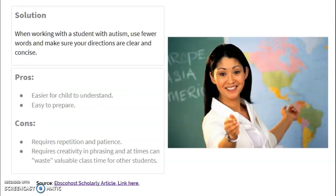Another solution is that when working with a student with autism, using fewer words and making sure your directions are clear and concise will help them to understand. The pros are that the child will be able to understand and it's easy to prepare. The cons are that it requires repetition and patience, as well as creativity in phrasing, and at times can waste valuable class time for other students. But if the autistic child is able to understand quicker, things will go more smoothly for the whole class.